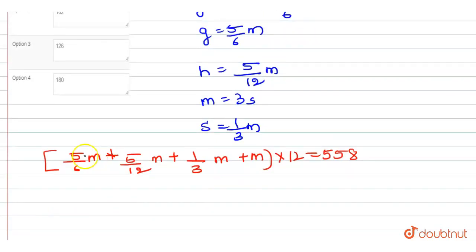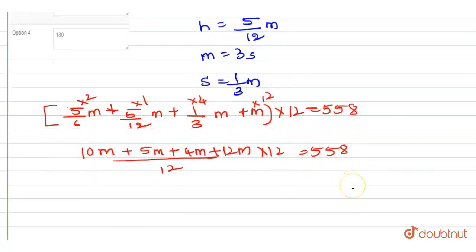Now we will simplify this. (10M + 5M + 4M + 12M) divided by 12 equals 558. We are going to further simplify it. This 12 and this 12 will cancel out.